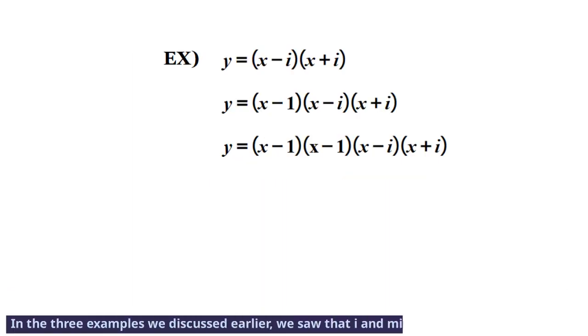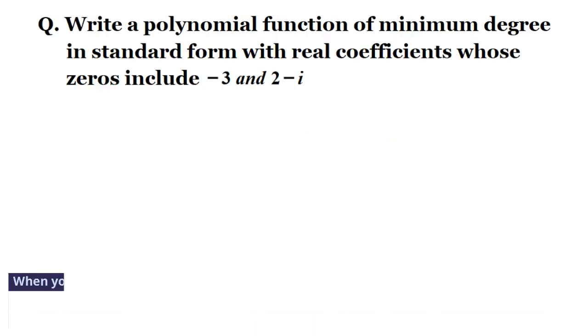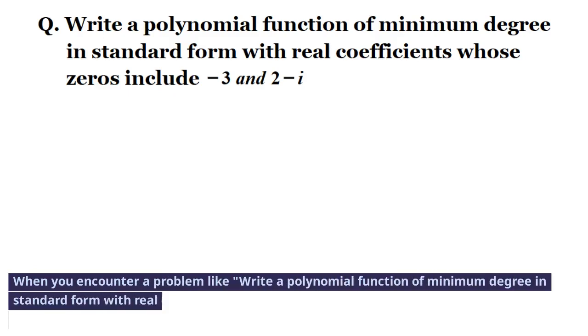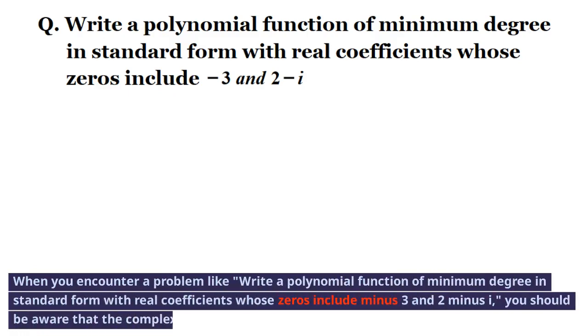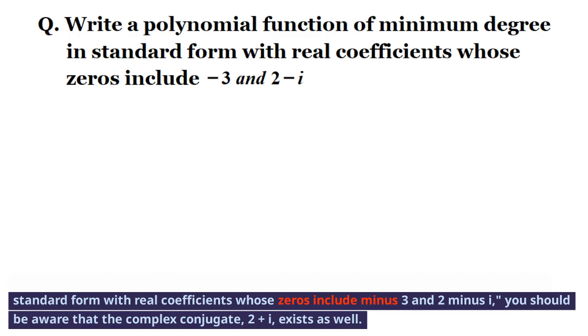In the three examples we discussed earlier, we saw that i and minus i always come in pairs. When you encounter a problem like, write a polynomial function of minimum degree in standard form with real coefficients whose zeros include minus 3 and 2 minus i, you should be aware that the complex conjugate, 2 plus i, exists as well.